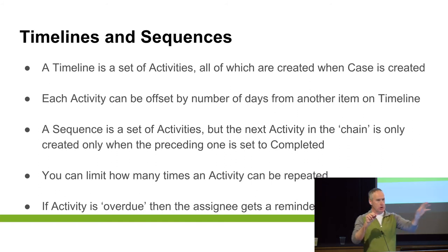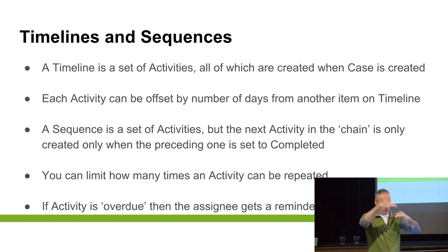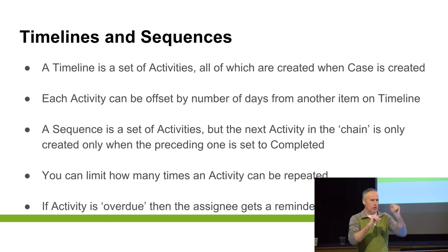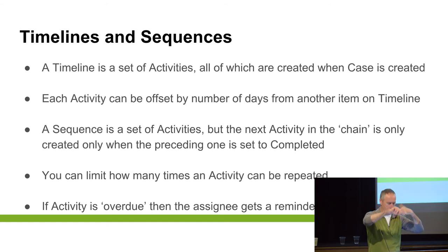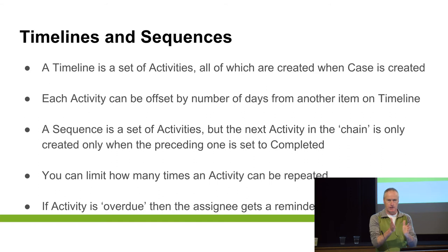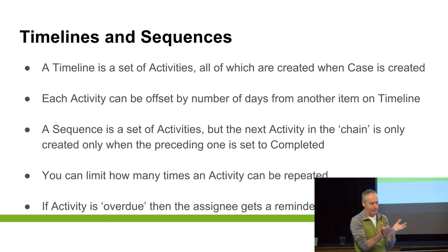The difference between timeline and sequence: a timeline lets you step through this timing process. A sequence means you do B after A and won't even show you B until you've done A — do A, it adds B; do B, it adds C. You can also limit how many times an activity is repeated — for example, you're not allowed to ring this person more than five times.